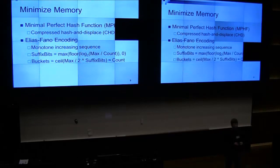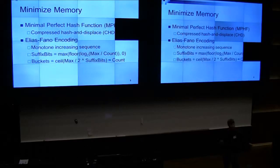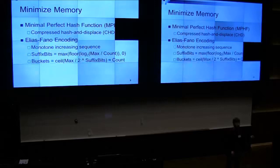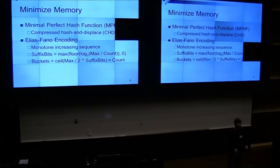Basically, the data is split into buckets — M buckets and N elements, where M and N are roughly the same. For every bucket boundary, you store a bit of one, and for every element inside each bucket, you store a bit of zero. Then you store the suffixes separately.